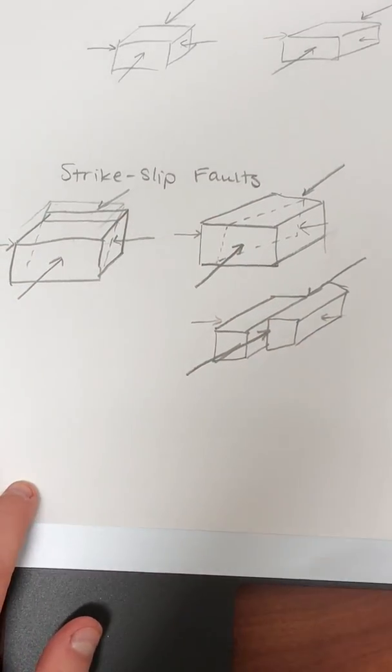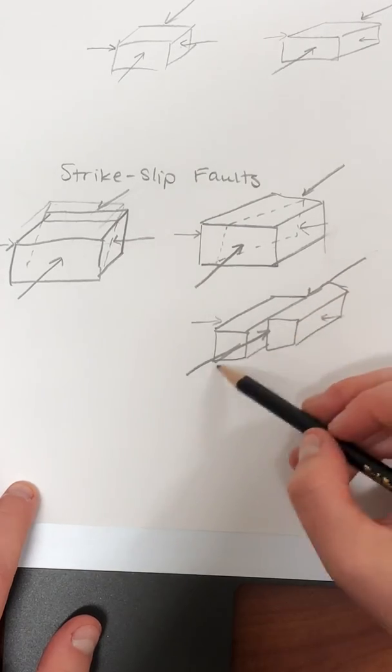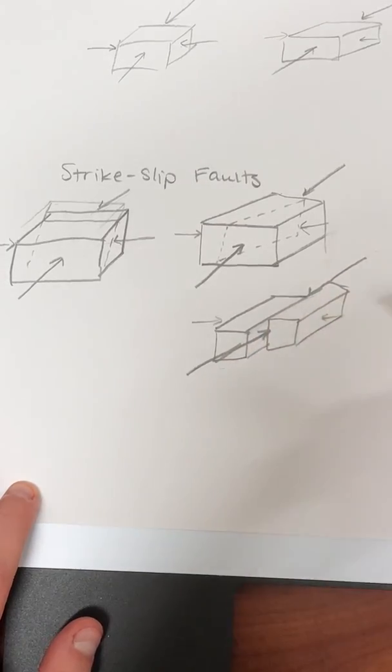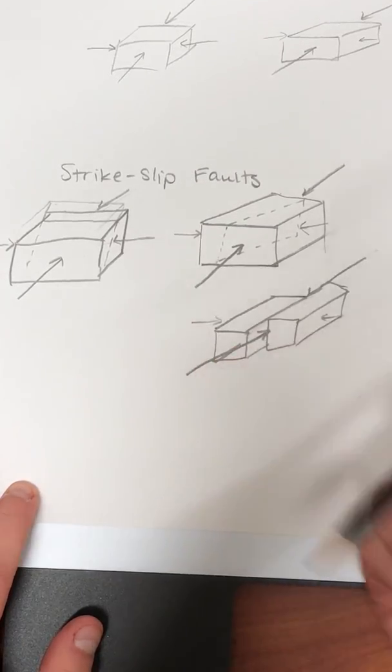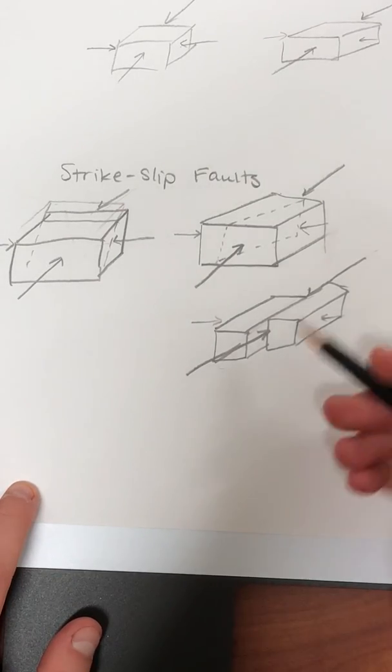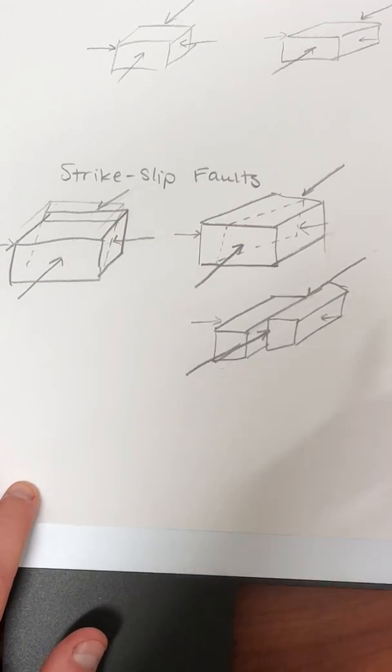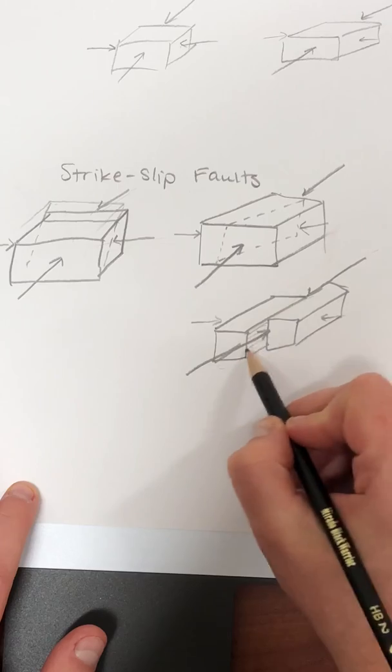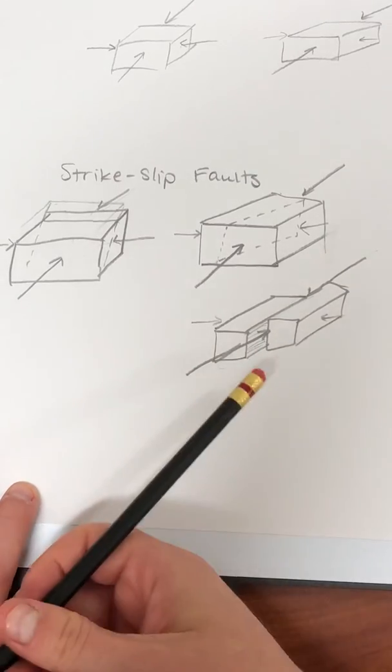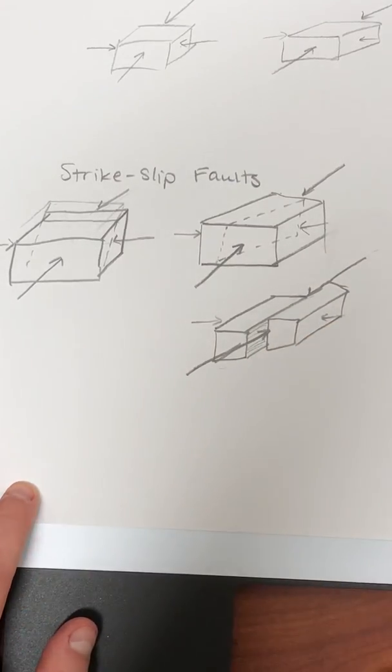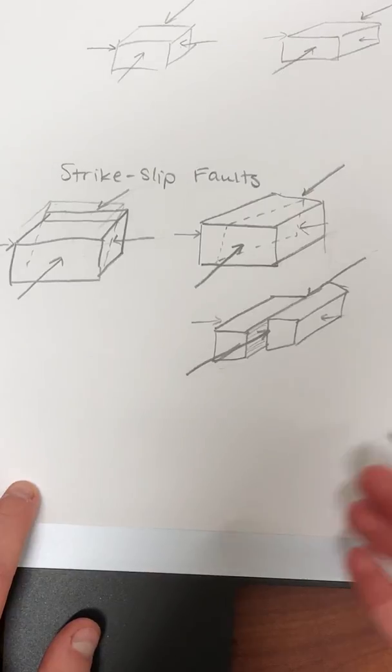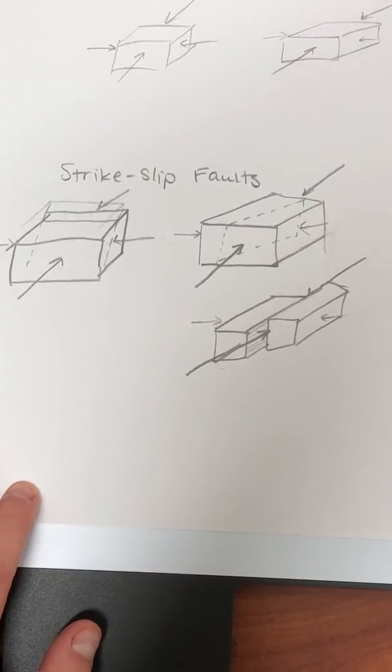We call these strike-slip faults because this direction, the direction that the fault plane is at the surface, we call that strike. So it's a line of equal elevation that's on the fault plane, describes the direction of the fault plane. And if all the slip or all the movement of that fault happens in the same direction as strike, or is in the direction of the fault plane, then it's slipping in the direction of strike. We call it strike-slip.